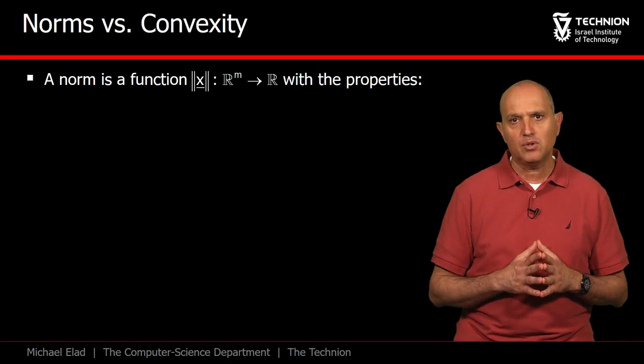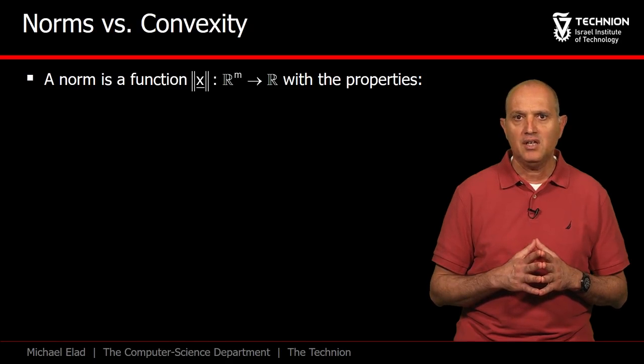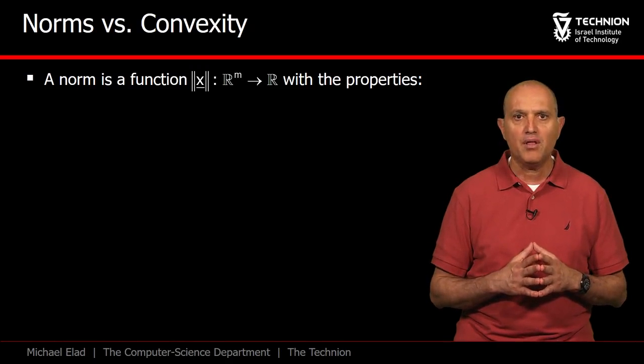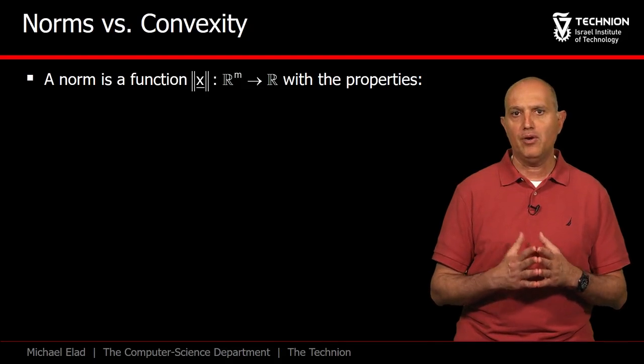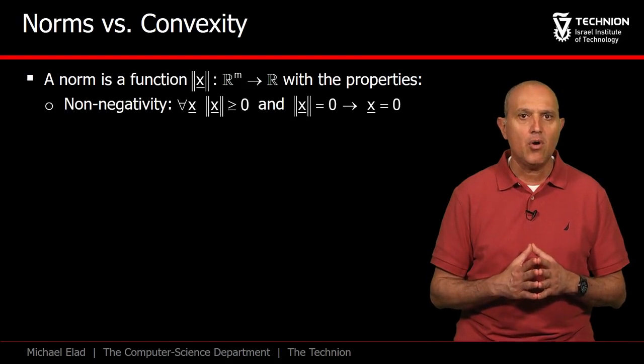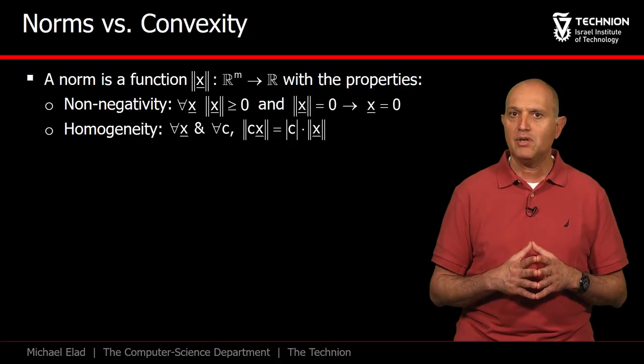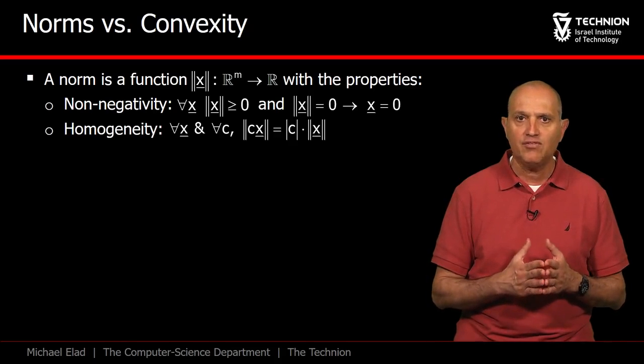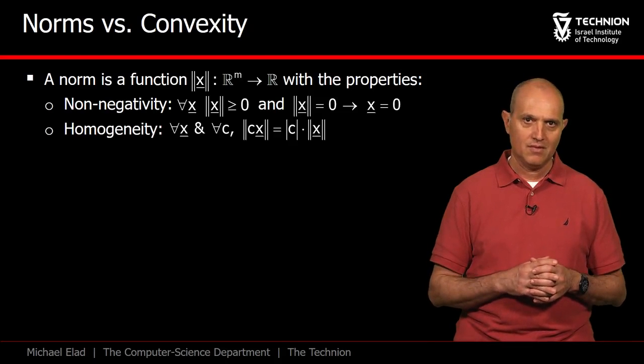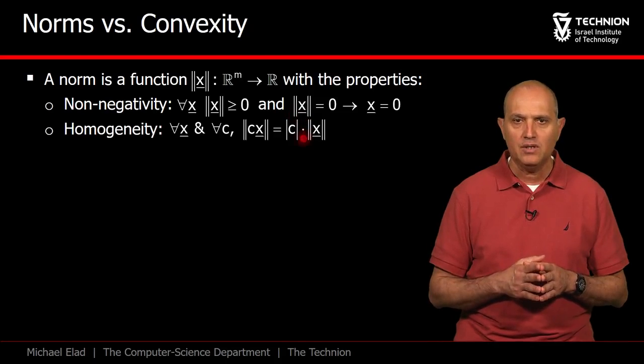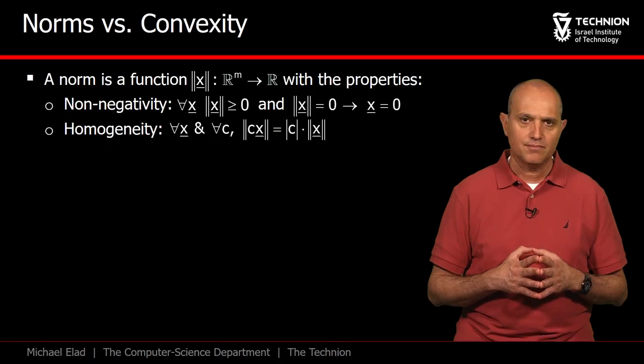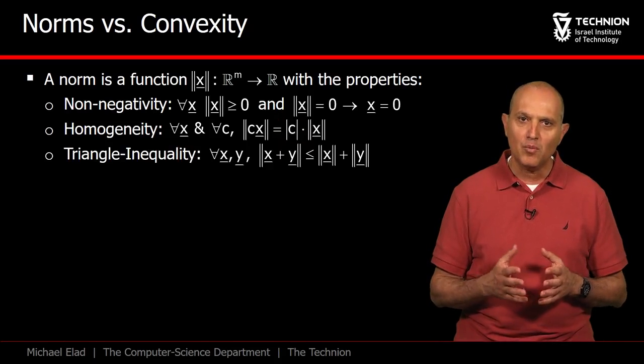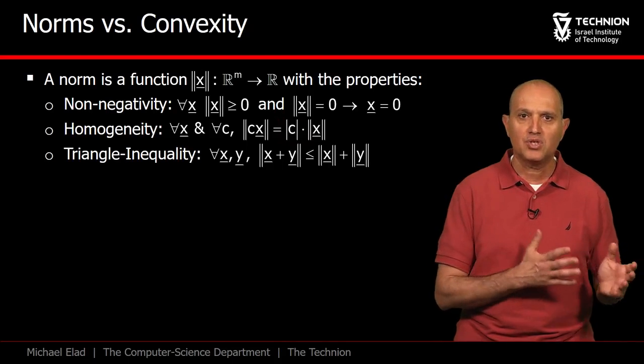A norm in a vector space is a function operating on the vectors and yielding scalar values, interpreted as the vector's length. Such a function must obey three axioms in order to be a formal norm. Its value cannot be negative, and it is zero only for the zero vector. The function must obey the homogeneity property that states that the value of the norm for a scaled vector is simply the scaled value of the norm of the vector itself. Notice that the scale is put in absolute value so as not to violate the first axiom. The last and most known property that norms should obey is the triangle inequality: the norm of a sum of vectors is shorter than the sum of the vector's norms.